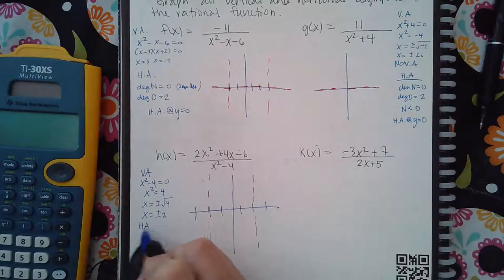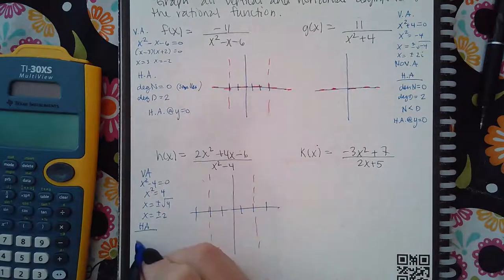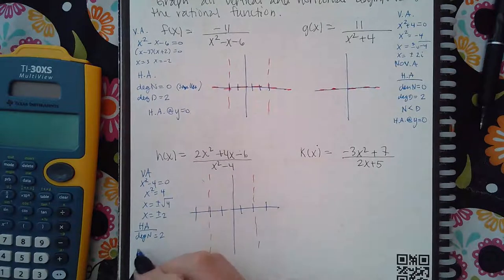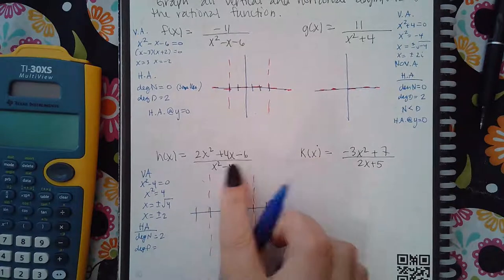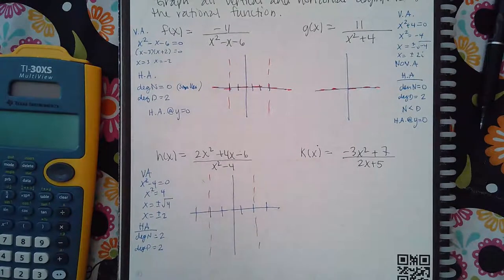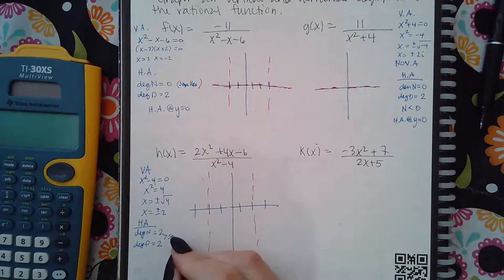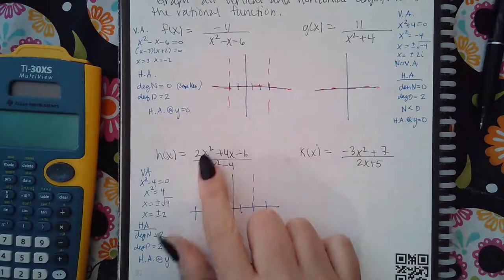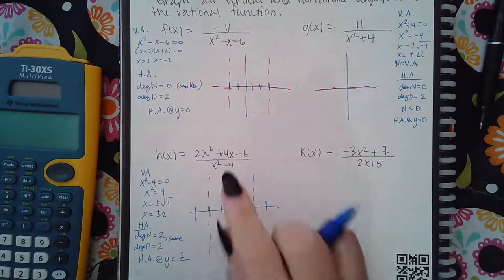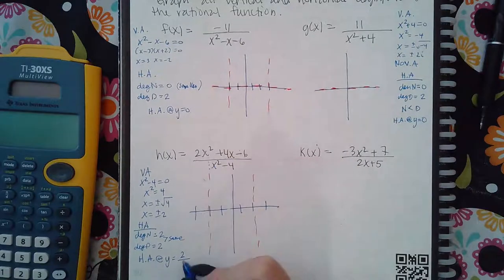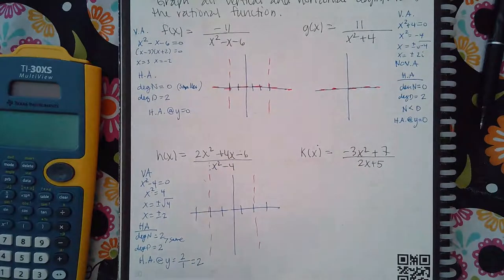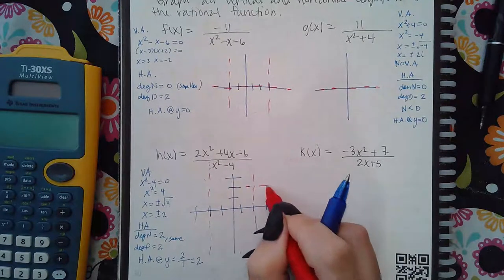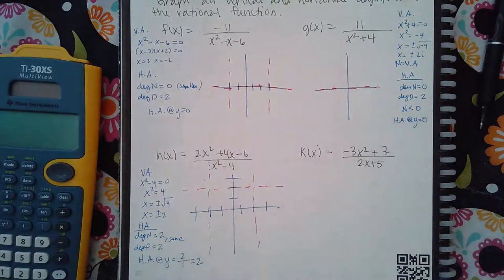For the horizontal asymptote, the degree of the numerator is two and the degree of the denominator is also two — they are the same. When the degrees are the same, the horizontal asymptote is at y equals the leading coefficient of the numerator over the leading coefficient of the denominator, which simplifies to two. So there is a horizontal asymptote at y equals two.